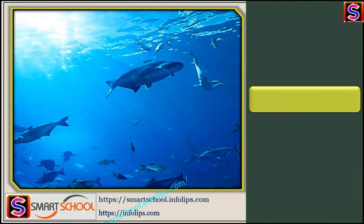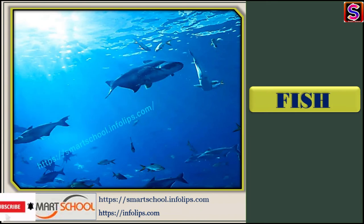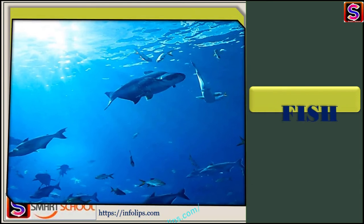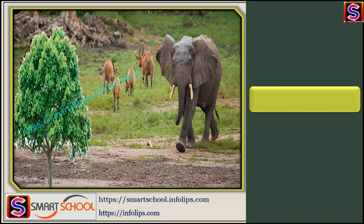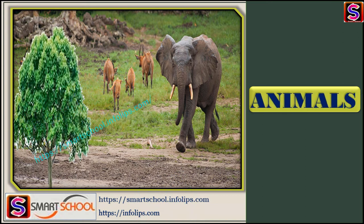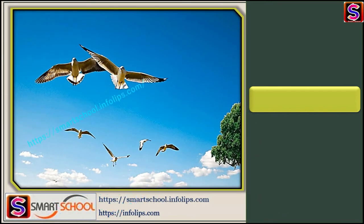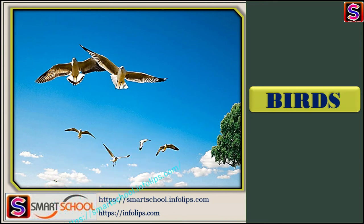What is this? This is a fish — we can find it in the ocean. Now tell me, what is this? These are animals that stay in the forest. And what is this? These are birds — the birds are flying in the sky. Very beautiful!